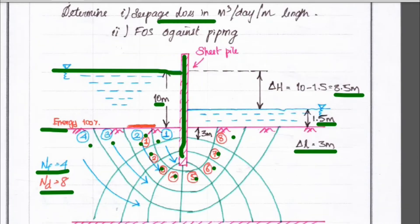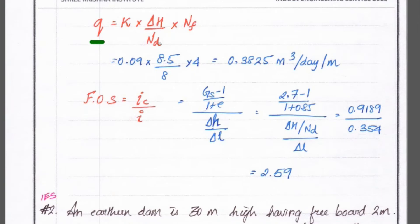We have to find out the seepage losses in meter cube per day per meter length and factor of safety against piping. We know the formula. So, q is equal to k into del h divided by nd into nf.